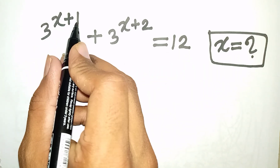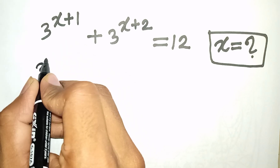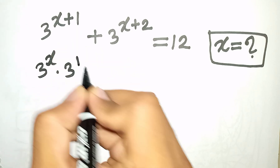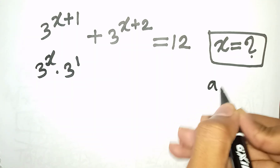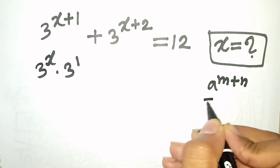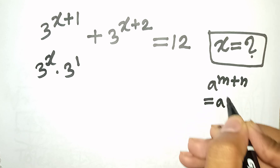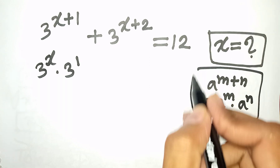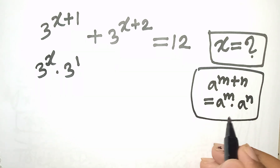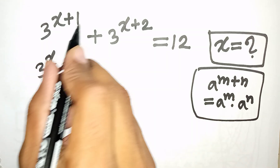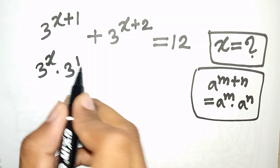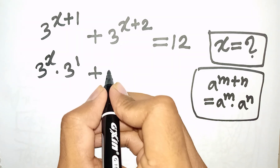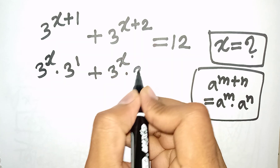We have 3 power x plus 1, which is the same as 3 power x times 3 power 1, according to the formula a power m plus n equals a power m times a power n. Similarly, 3 power x plus 2 is the same as 3 power x times 3 power 2.